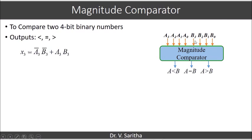First we compare A3 and B3. If these two are equal, then only we compare A2 and B2. If those are also equal, we compare A1 and B1, and then A0 and B0. So we can say A equals B when A3=B3, A2=B2, A1=B1, and A0=B0.